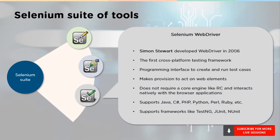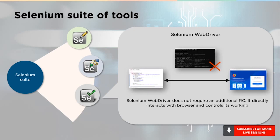We have the Selenium WebDriver. It was developed by Simon Stewart, and WebDriver revolutionized automation testing. It was the first cross-platform testing framework that provided the interface to create and run test cases. WebDriver allows users to perform actions like click or hover on web elements. The scripts can be written in any programming language, be it Perl, PHP, Java, etc. It also supports frameworks like TestNG or JUnit for test management. The main USP of WebDriver is that, unlike RC, it doesn't require a core engine and interacts with the browser natively.